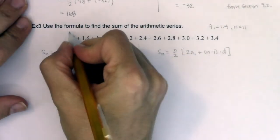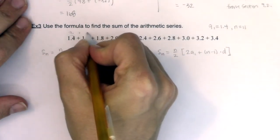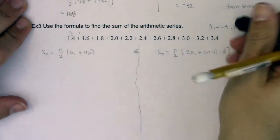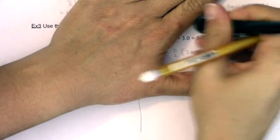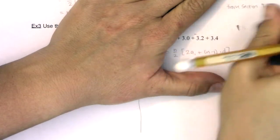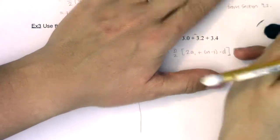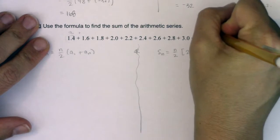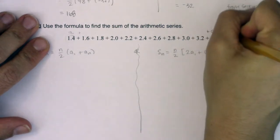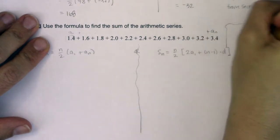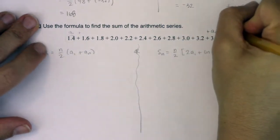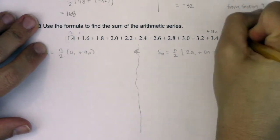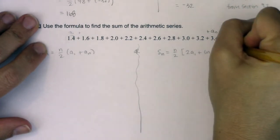And again, this is a_sub_1 plus all the way out to a_sub_n. So as I go through this, we had just said a_sub_1 was 1.4 and n was equal to 11.